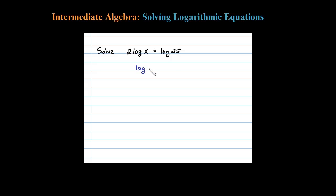By applying the property that says we can use that 2 as an exponent, now I have a log equals a log. They have the same base, 10. The only way that can happen is if the arguments are equal.